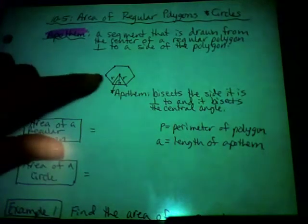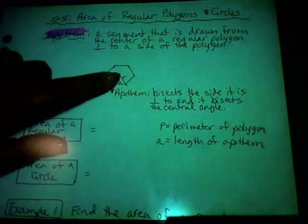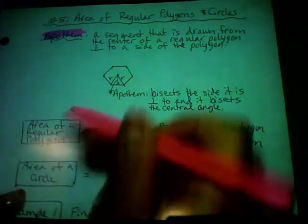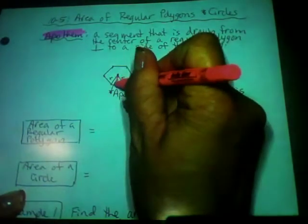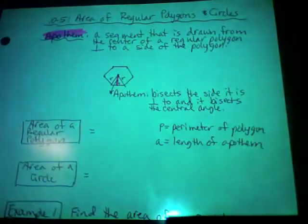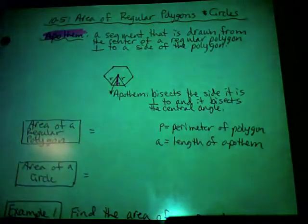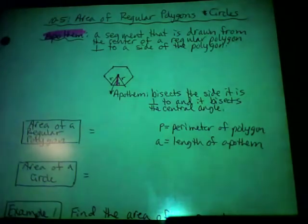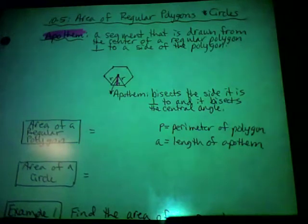As you can see in this picture, this little piece from the center down to that side is the apothem. This happens to be a hexagon. I could draw six different apothems — you're only going to draw one — but there's not just one.